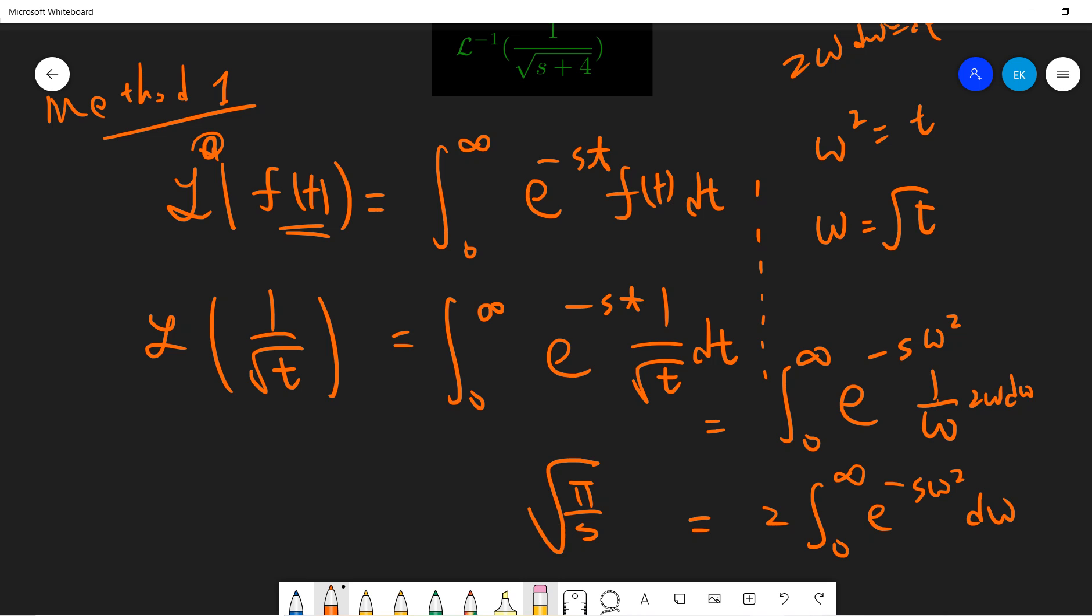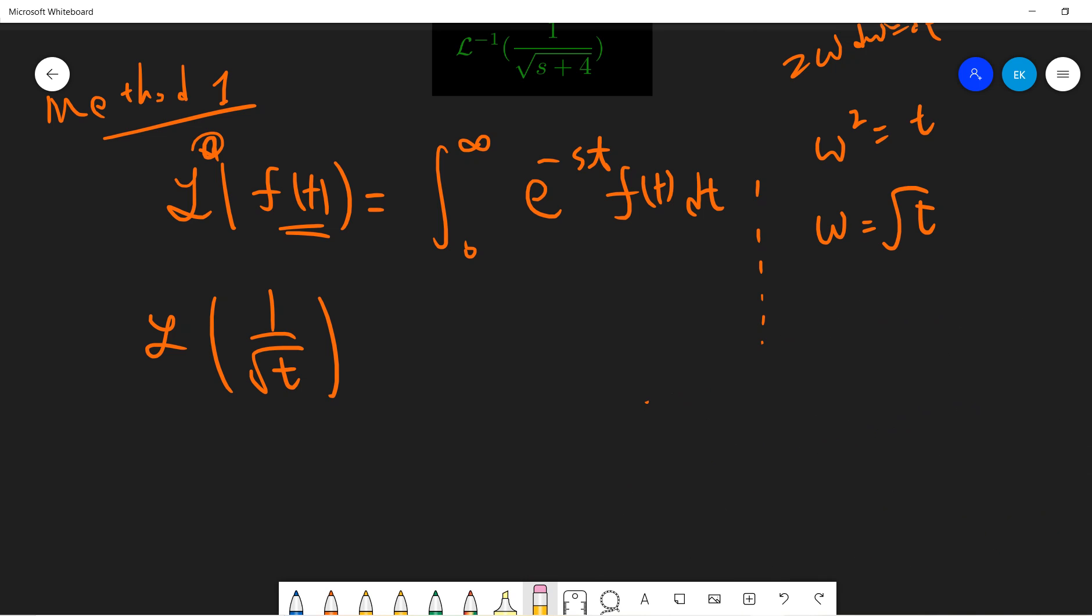So, what we get now is that the Laplace transform of 1 over square root of t will give you square root of pi divided by s, okay?